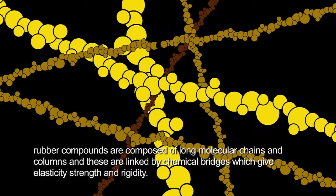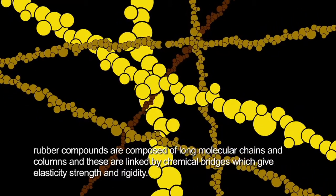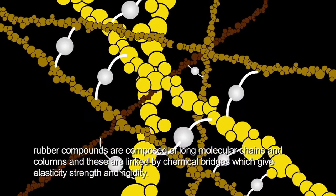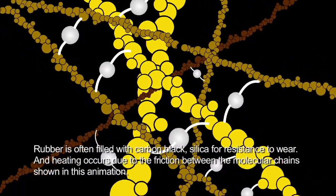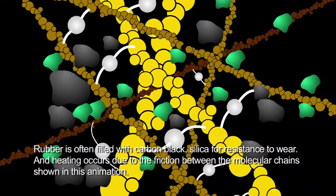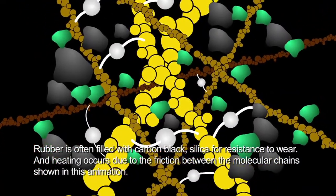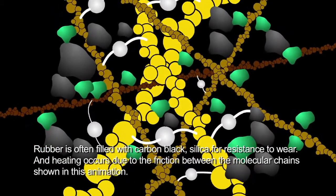If we take a closer look, rubber compounds are composed of long molecular chains and columns, and these are linked by chemical bridges, which give elasticity, strength, and rigidity. Rubber is often filled with carbon black and silica for resistance to wear, and heating occurs due to the friction between the molecular chains shown in this animation.